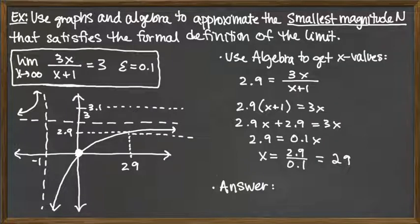My answer here is—I mean it says the smallest magnitude n—because if I pick 29, then the end of my graph is within that horizontal bar, close enough to the y value of 3.